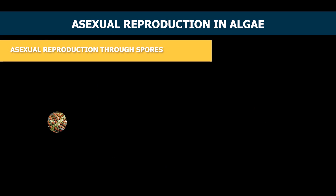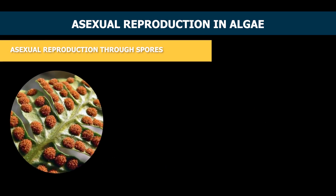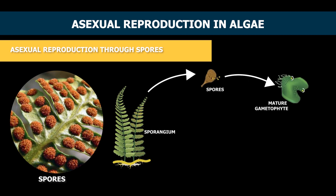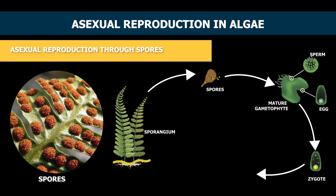2. Asexual reproduction through spores. Spores are small cells which germinate to become full grown plants. In this reproduction, spores produce male and female gametes, and then these gametes fuse together to form a zygote which grows into a plant.